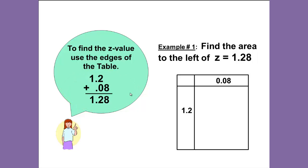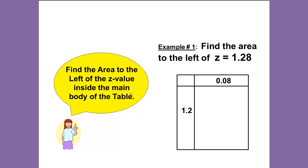So we now have the 1.2, the 0.08—they together make our number—and we want to find the area to the left of the Z value. We want to find the value inside the main body of the table.